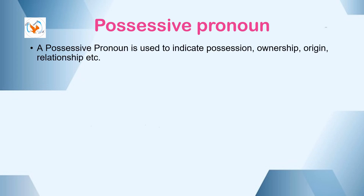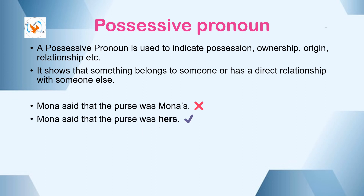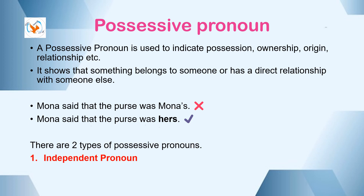Possessive pronoun: A possessive pronoun is used to indicate possession, ownership, origin, relationship, etc. It shows that something belongs to someone or has a direct relationship with someone else. For example, instead of saying 'Mona said that the purse was Mona's,' you would say 'Mona said that the purse was hers.' This sounds more natural and conveys the same meaning without repeating the noun. There are two types of possessive pronouns: independent pronoun and dependent pronoun.